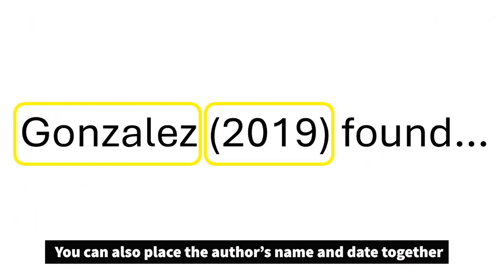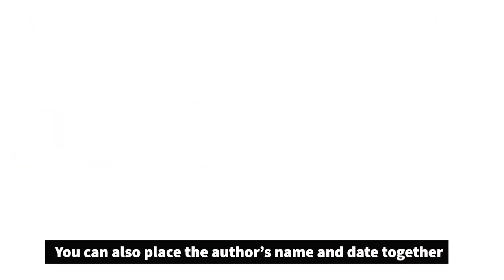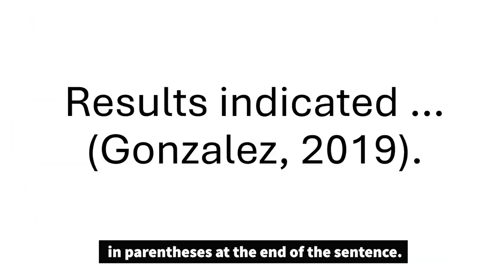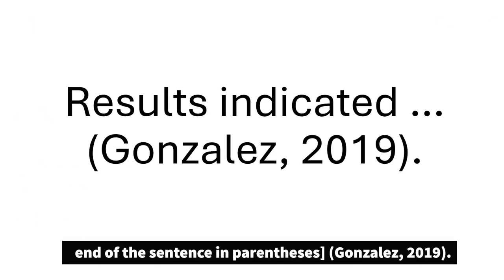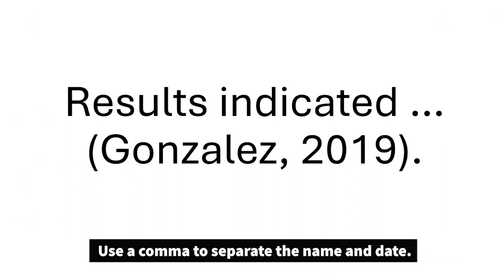You can also place the author's name and date together in parentheses at the end of the sentence. Text on the screen reads 'results indicated...' and then at the end of the sentence in parentheses: Gonzalez, comma, 2019. Use a comma to separate the name and date.